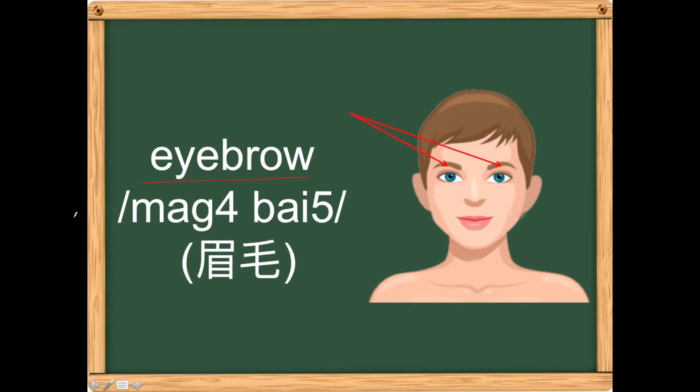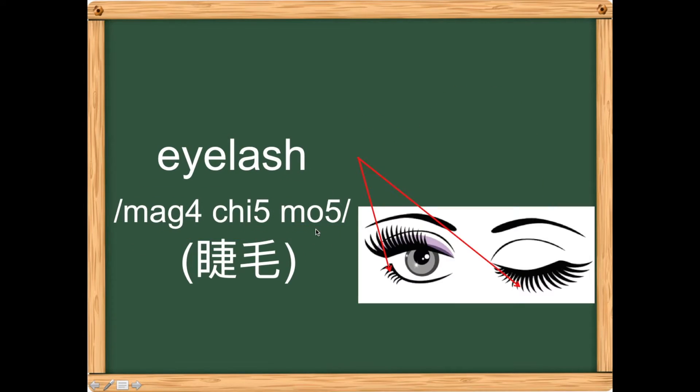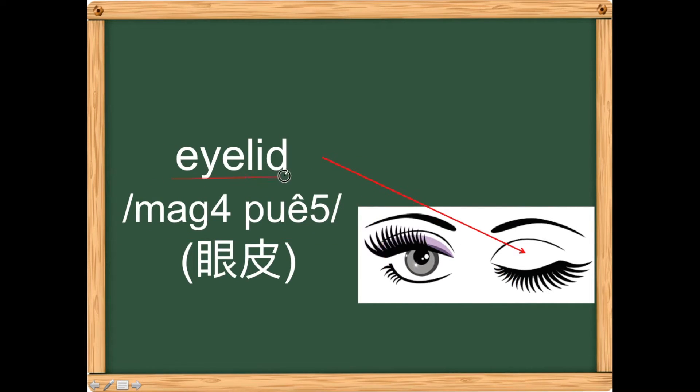Eyebrows are called 'mặc bái.' The eyeglass is called 'mặc chi mò.' The eyelid is called 'mặc bái.'